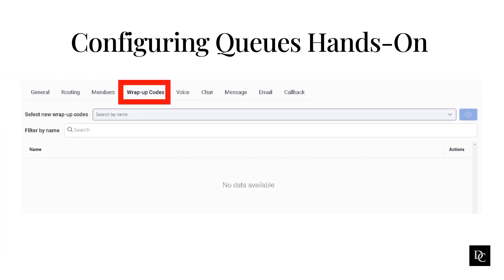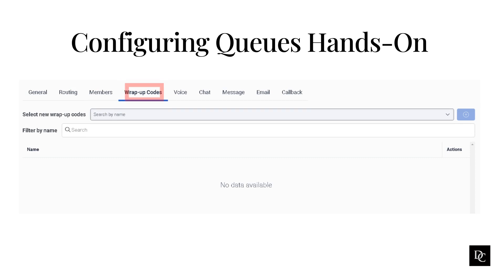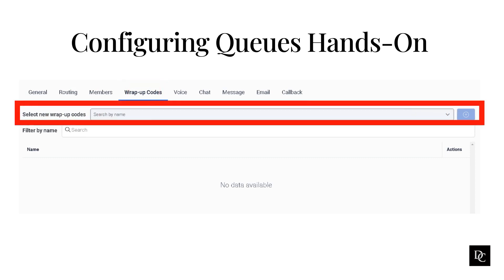In the Wrap-up Codes tab is where you will add the wrap-up codes that agents will use to wrap up their interactions. In the select wrap-up codes box, begin typing the name of the code and then select the appropriate match from the results. In order to add wrap-up codes, you must add them to the system first. To add the wrap-up code to the queue, click the plus icon.